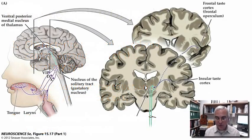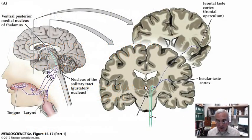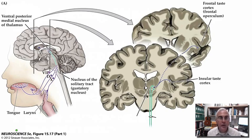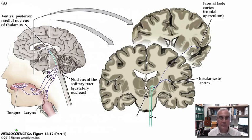Let's begin with a broad anatomical view of our gustatory pathways. Gustation, or our sense of taste, begins in the oral pharynx, where we find sensory cells associated with an anatomical structure called the taste bud, which we'll consider in more detail in just a few minutes.